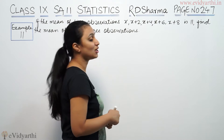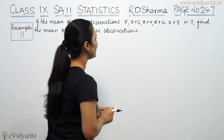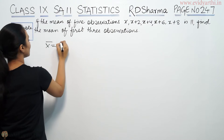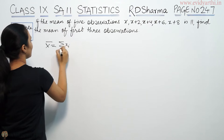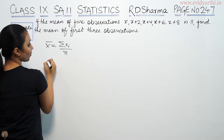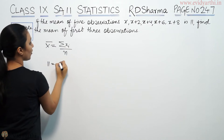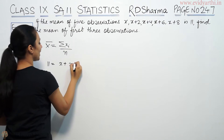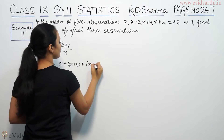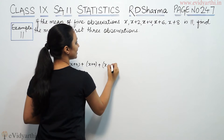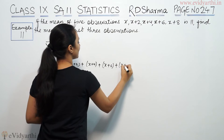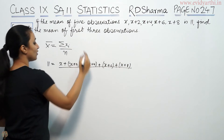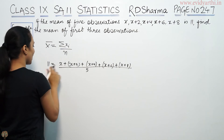Find the mean of the first three observations. So first, mean is equal to summation x_i over n. We have the mean given as 11, and the sum of observations — summation means sum — so x plus x plus 2 plus x plus 4 plus x plus 6 plus x plus 8, divided by 5 observations.